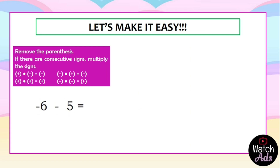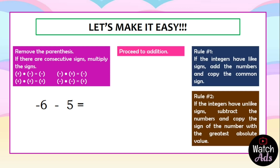Another example: negative 6 minus 5. No parenthesis to remove, no consecutive signs — we proceed to addition. The same signs: negative 6 and negative 5 are the same sign. Add the numbers, copy the common sign. Our final answer is negative 11.